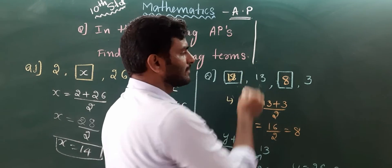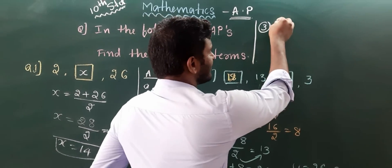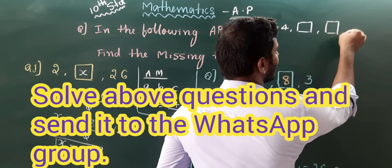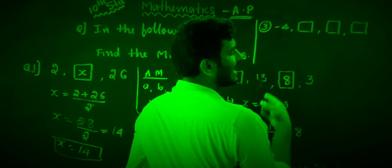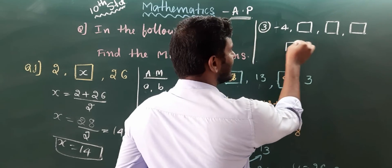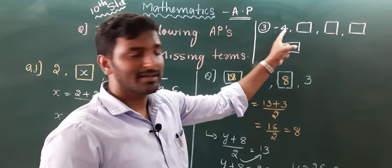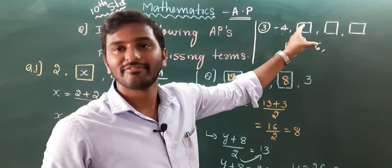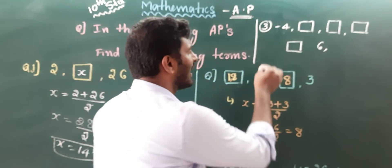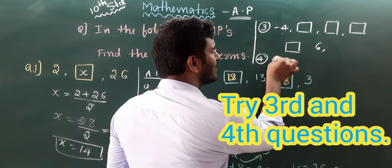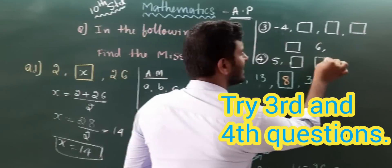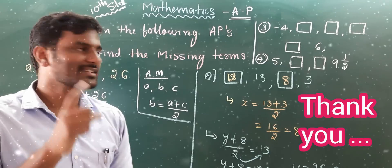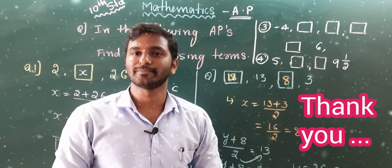Now try these two practice questions. Question 3: the first number is 4, and the last (fifth) term is 6 — find the missing second, third, and fourth terms. Question 4: the first number is 5, the fourth number is 9 and a half (nine and one-half), and the second and third terms are missing. Find the missing terms and send your answers on WhatsApp.